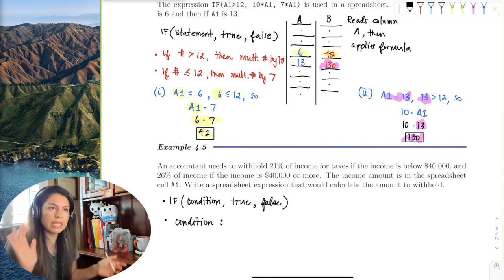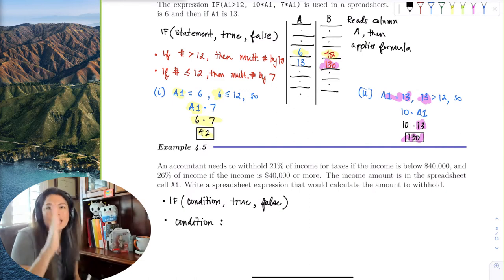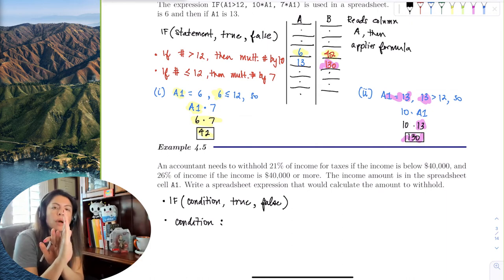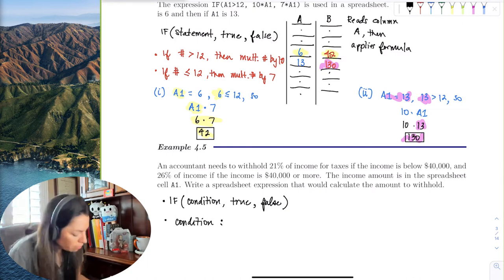So it looks like the income and that barrier number is $40,000. If it's going to be more, it's going to withhold a larger percentage. So the condition is if it's below $40,000.